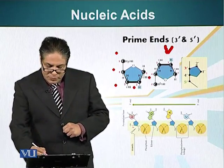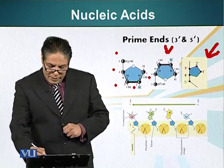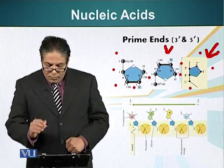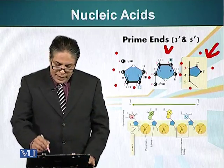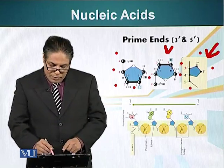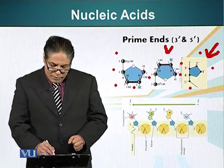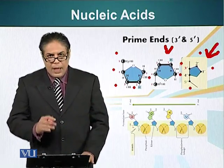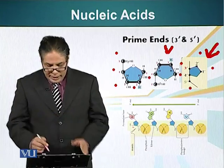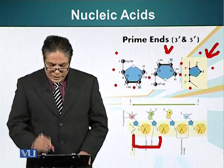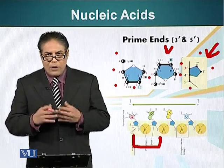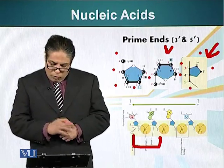We can abbreviate this pentose in a form where the carbon atoms are numbered 1, 2, 3, 4, and 5. The important point here is that carbon atoms number 3 and 5 are linked to phosphate groups. Phosphate groups form an ester linkage with two pentose sugars. This bond is called a phosphodiester bond since it is between a phosphate and two hydroxyl groups.